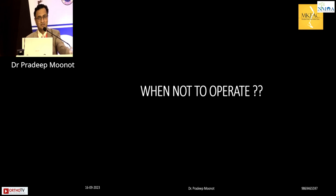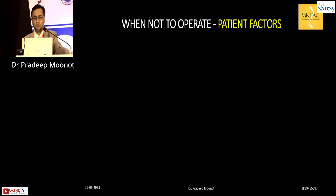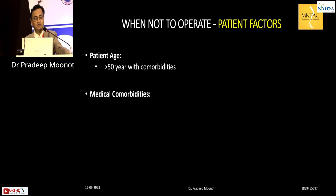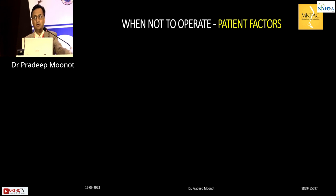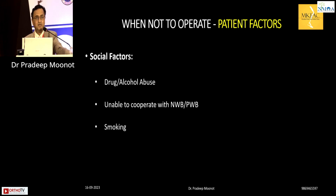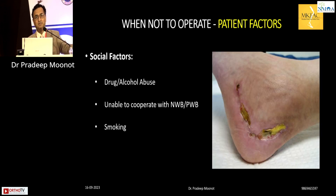The topic is when not to operate — and it is important for surgeons to know this. Patient factors that preclude surgery include elderly patients with comorbidities, uncontrolled diabetes, chronic smoking or tobacco use, peripheral vascular disease with absent pulses, peripheral neuropathy, and organic bone disease. Non-compliant patients who will not maintain post-operative non-weight-bearing or partial weight-bearing should also not be operated on. Chronic alcoholics are similarly high risk — operating on these patients can be a disaster.